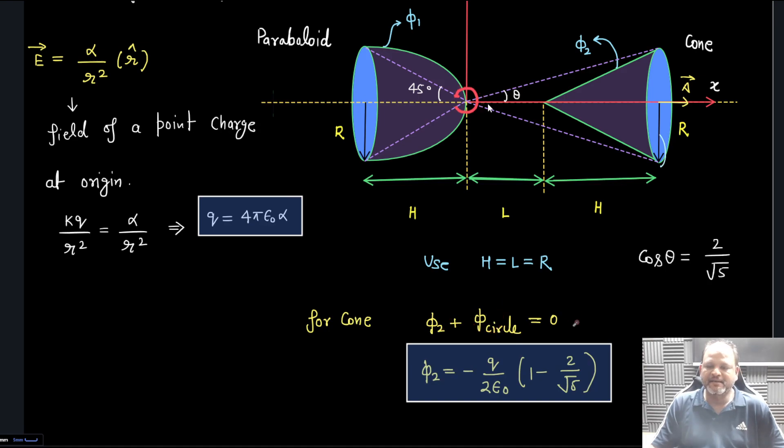Where there is no charge, total is zero. So Φ₂ directly we get minus Q/(2ε₀)(1 - cos θ). For cos θ, you can see this is 2L or 2H and this is R, so this is √5R.